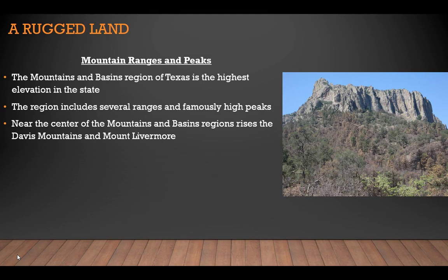The Mountain and Basins region of Texas has the highest elevation in the state and is considered part of the Rocky Mountain system. One mile is about 5,280 feet. Texas has seven mountains standing over 8,000 feet — each well over one mile high — and all seven peaks are found in this region. The region includes several ranges and famously high peaks. The Guadalupe Range extends into New Mexico. Near the center of the region rise the Davis Mountains and Mount Livermore, also called Baldy or Baldy Lee Peak, standing 8,378 feet high.